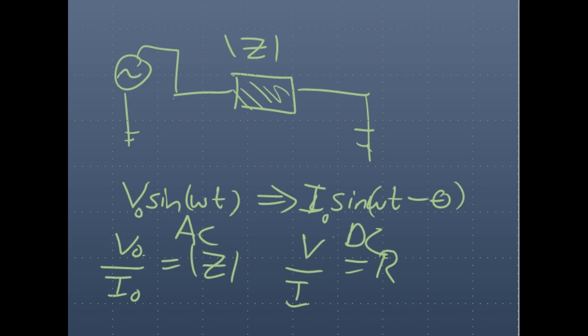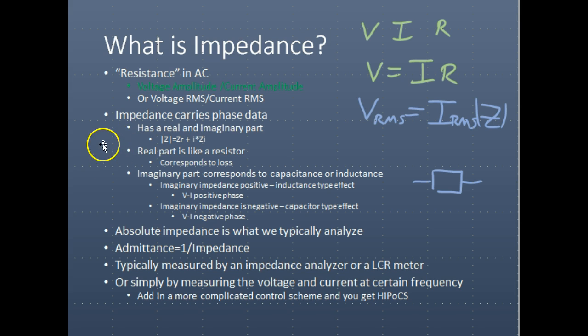In another way, we can also measure it using the RMS voltage and the RMS current. RMS is root mean squared, and you can look that up online. But essentially, for a sinusoidal output or wave, the RMS value equals the amplitude divided by square root of two.